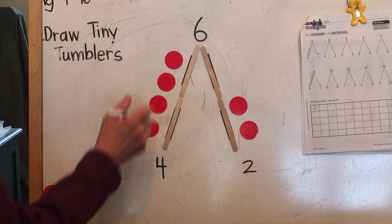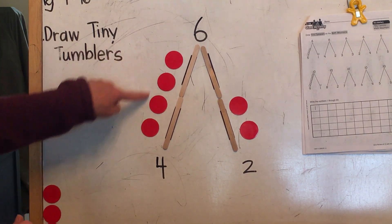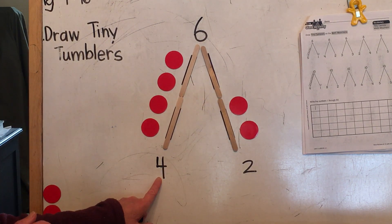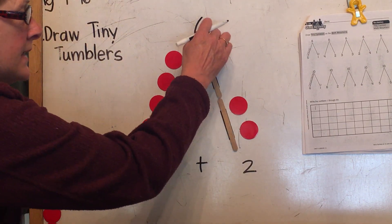What your job will be would be to draw the tiny tumblers. So let's pretend that I drew four here and two here. We need to write our equation four plus two equals six.